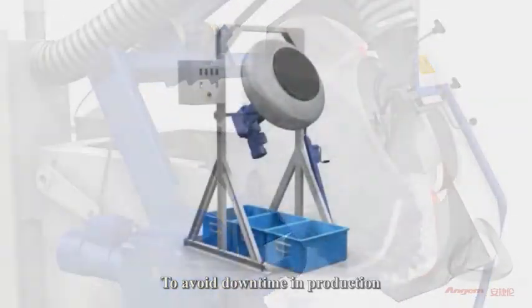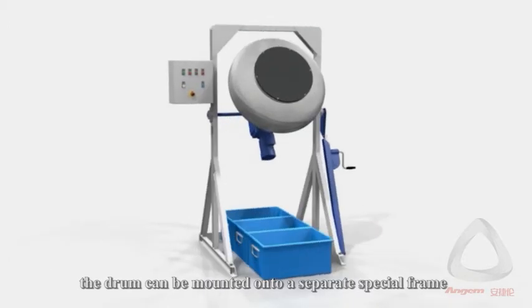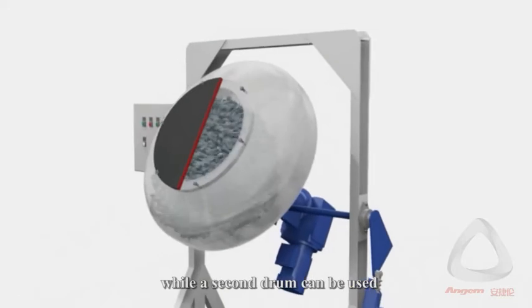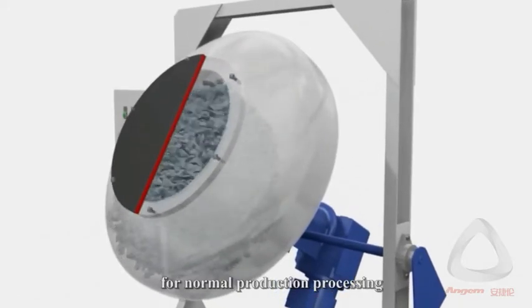To avoid downtime in production, the drum can be mounted onto a separate special frame. In this way, one drum can be cleaned while a second drum can be used for normal production processing.